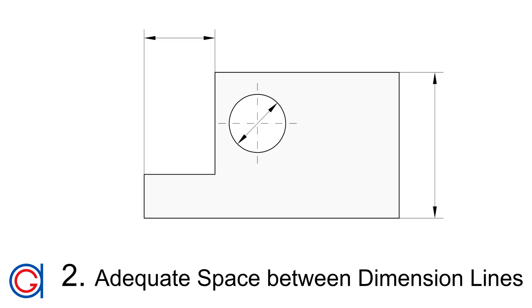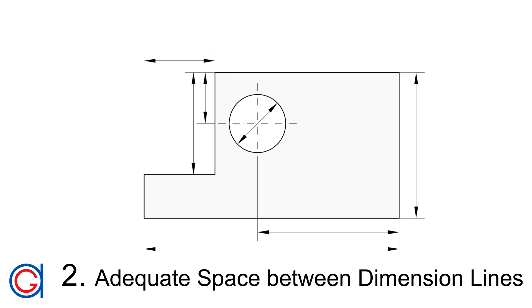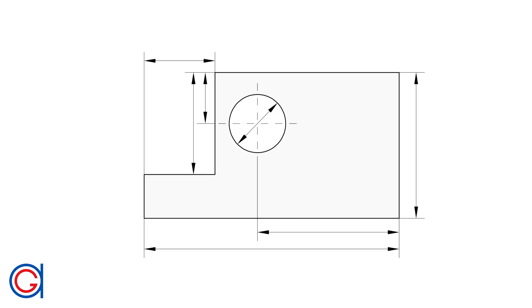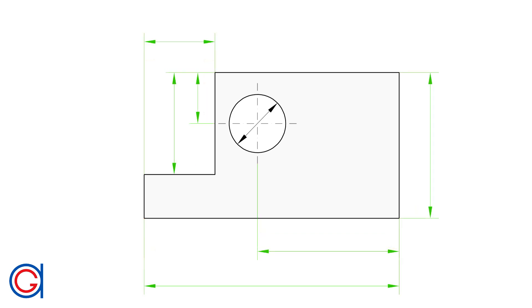Rule number 2 is to leave adequate space between dimension lines so that we have enough room to add in the numerical dimension. On the screen, the red dimension lines don't have enough space, and the green ones do, which are separated by a distance of approximately 10mm.